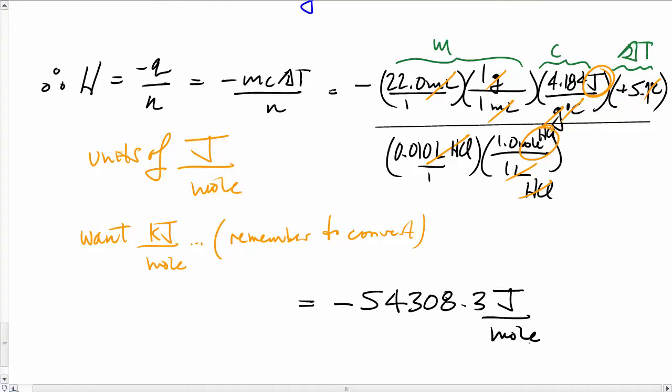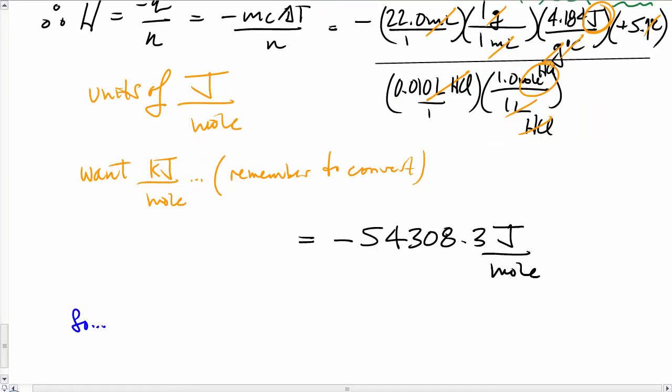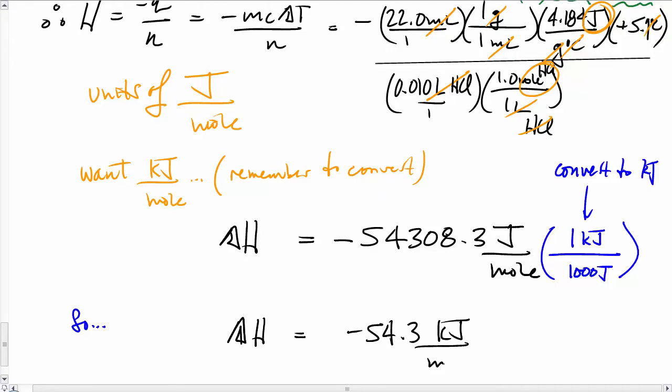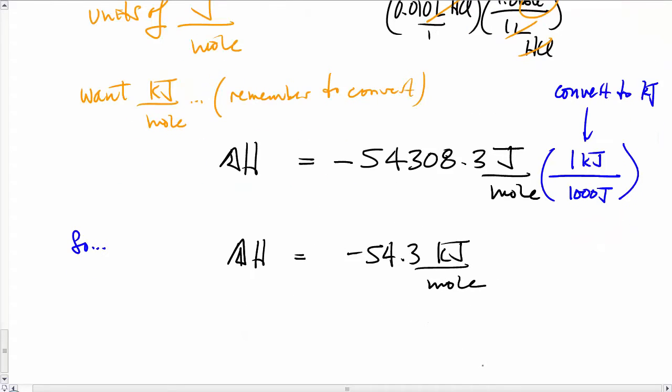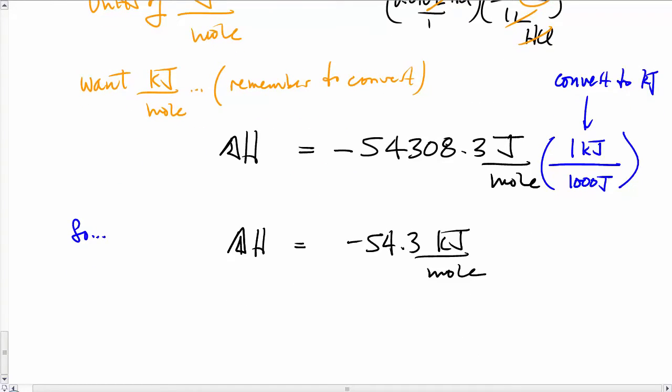This number, when you compute it, is a large number of joules per mole, and we'll make sure that we convert that. Just be sure you convert this to kilojoules. So here's ΔH, and it will wind up being -54.3 kilojoule per mole. The reaction is exothermic.